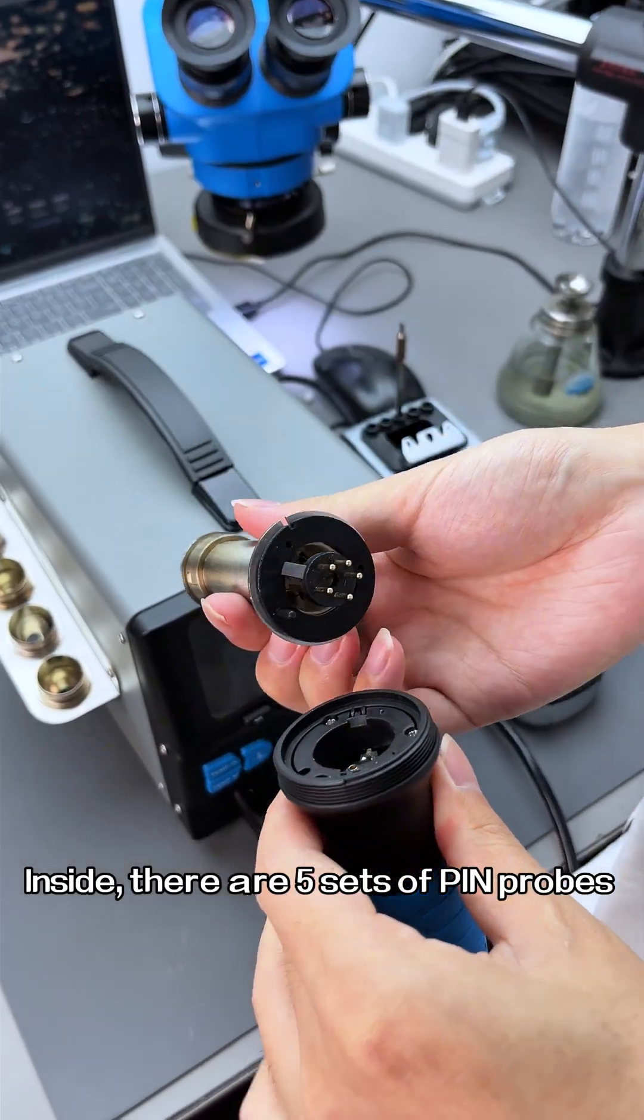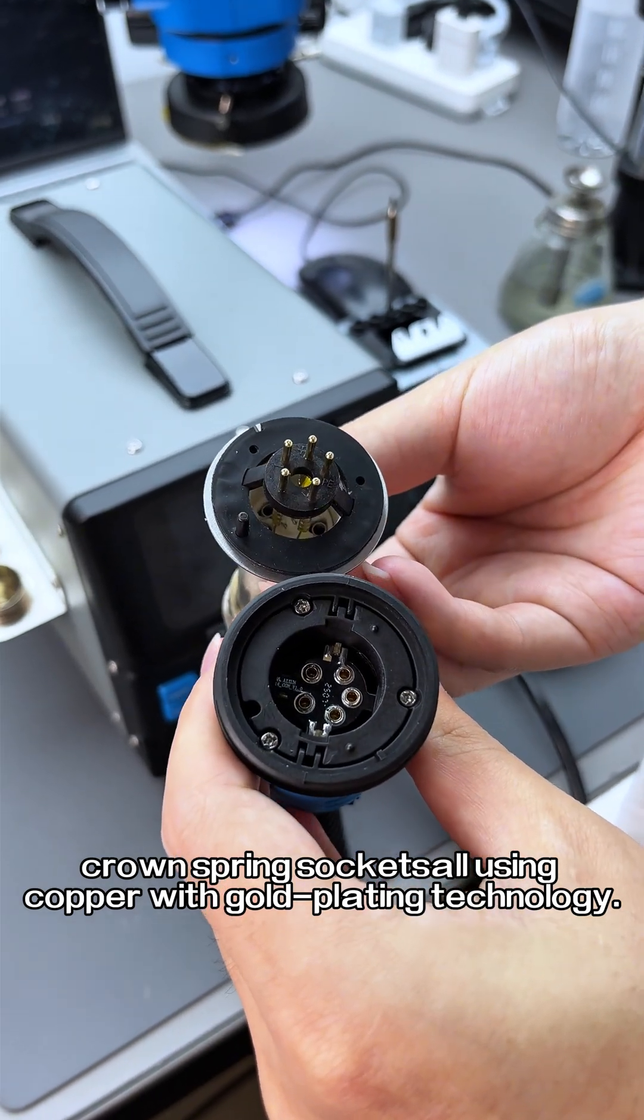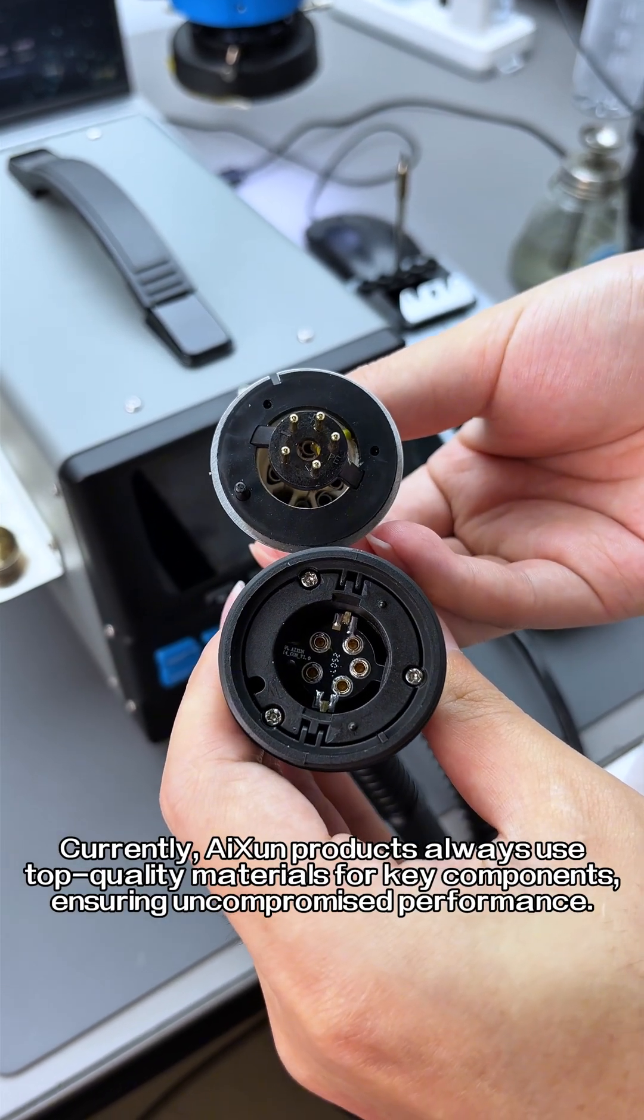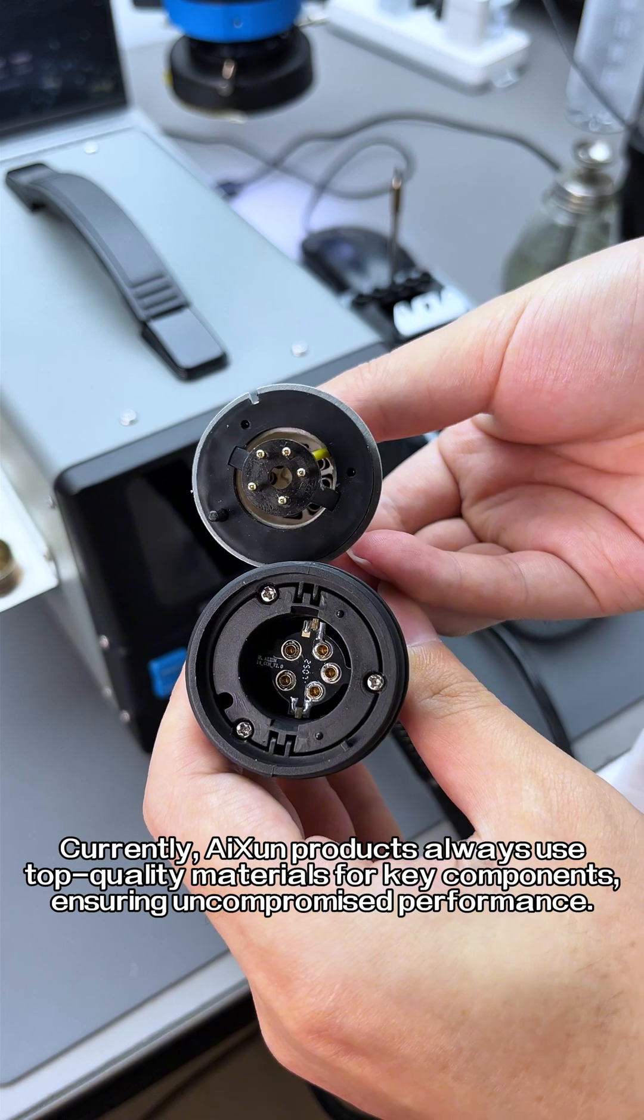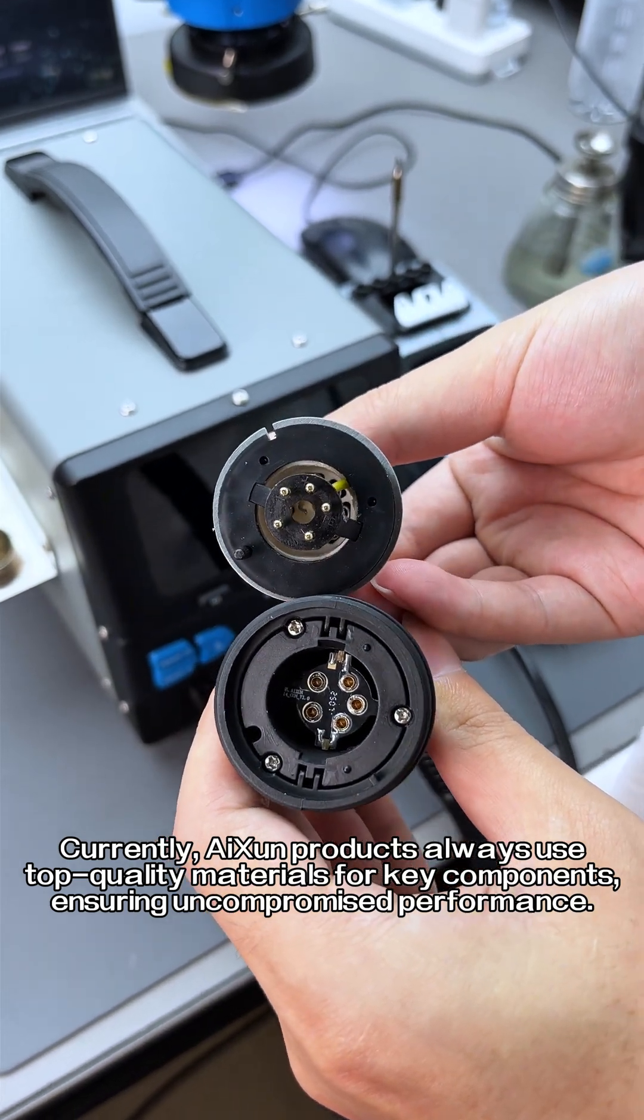Inside there are five sets of pin probes plus crown spring sockets, all using copper with gold plating technology. Currently AI Sun products always use top quality materials for key components, ensuring uncompromised performance.